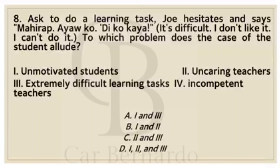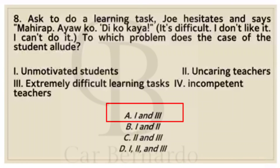Number eight: Asked to do a learning task, Joe hesitates and says: 'Mahirap. Ayaw ko. Di ko kaya.' (It's difficult. I don't like it. I can't do it.) To which problem does this relate? Number 1: Unmotivated students. Number 2: Uncaring teachers. Number 3: Extremely difficult learning task. Number 4: Incompetent teachers. Letter A: 1 and 3. Letter B: 1 and 2. Letter C: 2 and 3. Letter D: 1, 2 and 3. Answer: Letter A, 1 and 3.